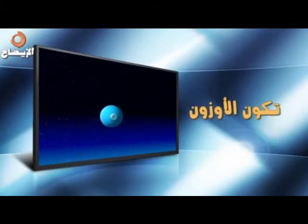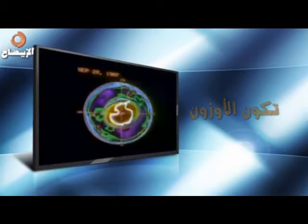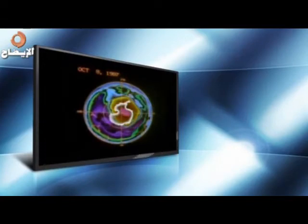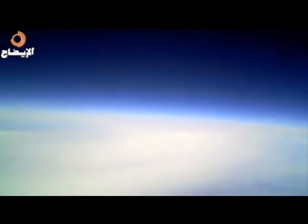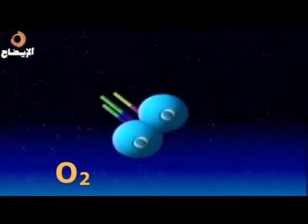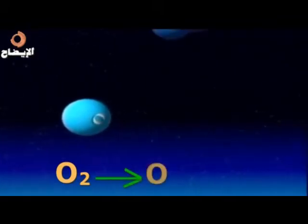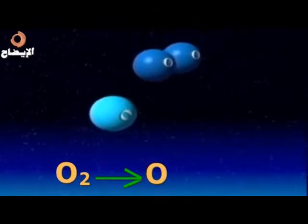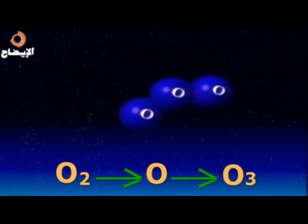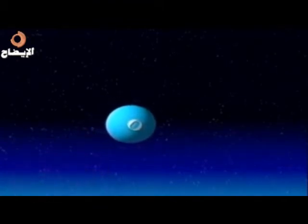تكوّن طبقة الأوزون. كيف يدخل الأوزون في طبقة الستراتوسفير؟ عندما يتعرض غاز الأكسجين O2 للأشعة فوق البنفسجية في الأجزاء العليا من الستراتوسفير تتحلل جزيئاته إلى ذرات منفردة O، تتفاعل بدورها مع جزيئات غاز الأكسجين O2 ليتكون الأوزون O3. ويمكن للأوزون أن يمتص الأشعة فوق البنفسجية ويتحلل مكوّناً غاز الأكسجين.